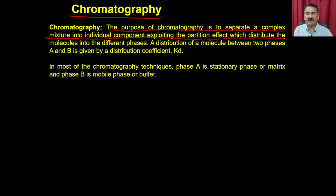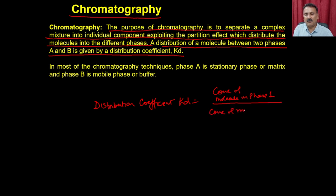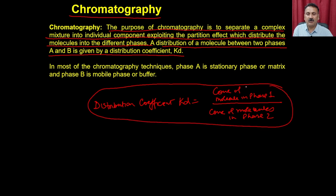The distribution of a molecule between two phases A and B is given by the distribution coefficient Kd, which equals the concentration of the molecule in phase one divided by the concentration in phase two. This value is not fixed — it varies depending on the molecule and the types of partitioning agents, such as the column or the beads used.